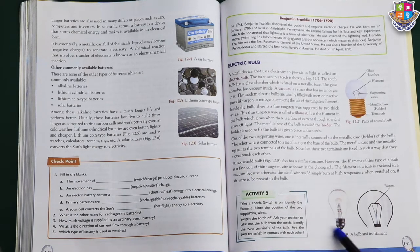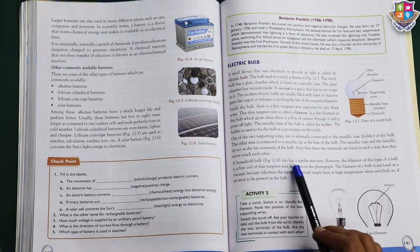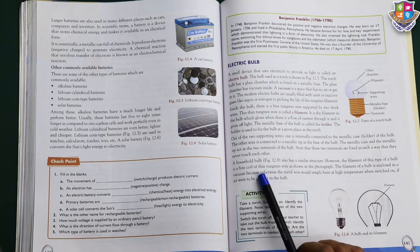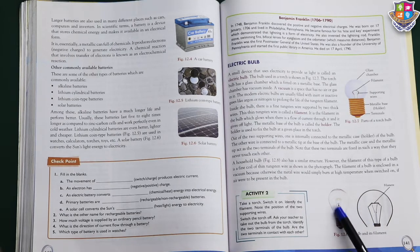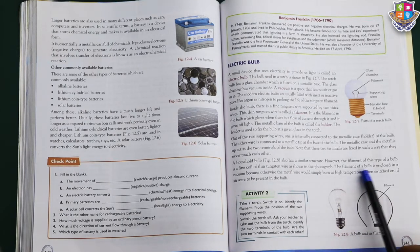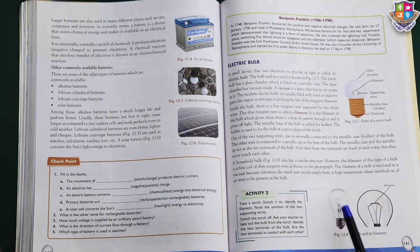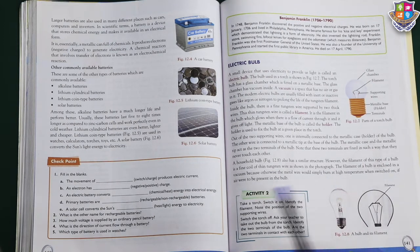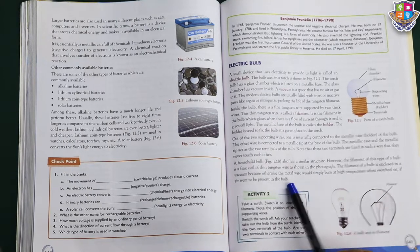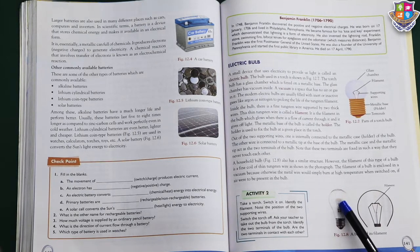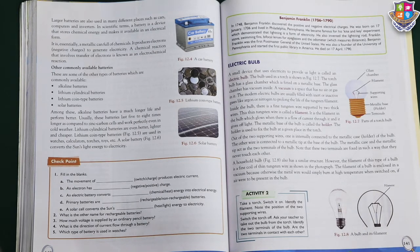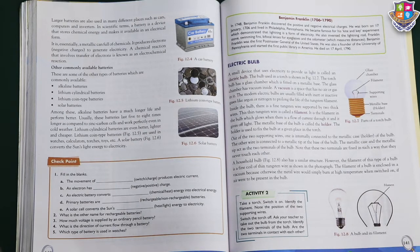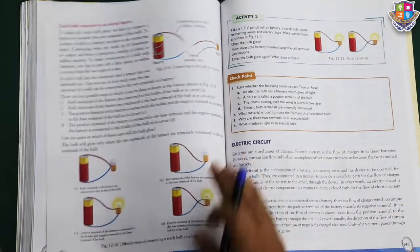The bulb in your house is of this type. Household bulbs also have a similar structure. However, the filament of this type of bulb is a fine coil of thin tungsten wire as shown in the photograph. Similar things are there. The filament of the bulb is enclosed in a vacuum inside the glass, because otherwise the metal wire would simply burn at high temperature when switched on if air were to be present in the bulb. If air were there, what would happen? This filament would burn itself. When electricity's current passes through it, it will burn. That's why if air gets in, we say the bulb has burst.